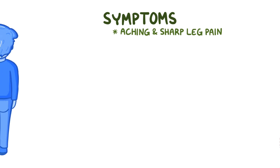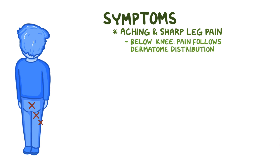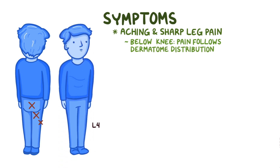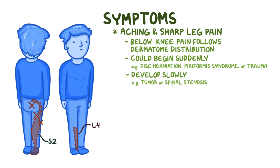In sciatica, the main symptom is aching and sharp leg pain. It radiates along the middle or lower buttock and on the back or outer side of the thigh. Below the knee, the pain usually follows the dermatome distribution. For example, if the L4 nerve root is compressed, the pain would radiate alongside the medial side of the leg; if the S2 nerve root is compressed, the pain would mostly be felt along the back of the leg. This pain could begin suddenly, usually with disc herniation, piriformis syndrome, or trauma. It could also develop slowly, as with a tumor or spinal stenosis, where the pain increases over time.